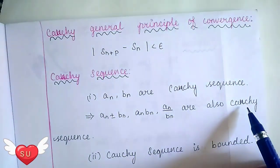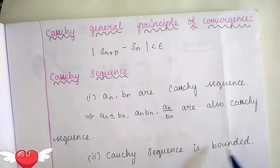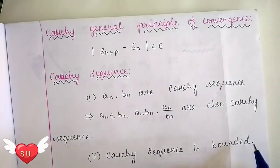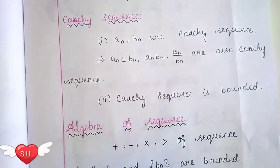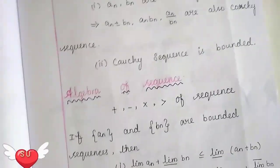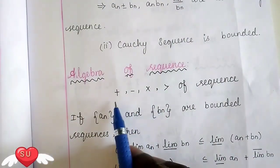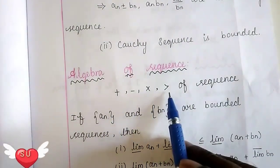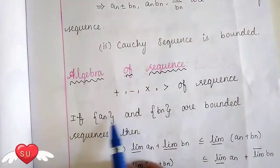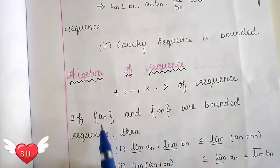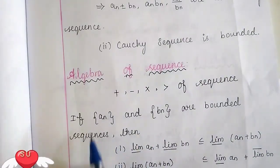We will talk about the sequence — bounded sequences. So next: algebraic properties of sequences — plus, minus, multiplication, greater than — if an and bn are bounded.